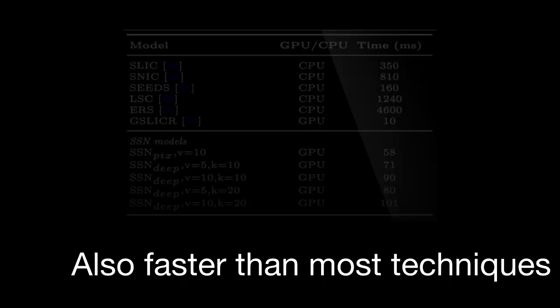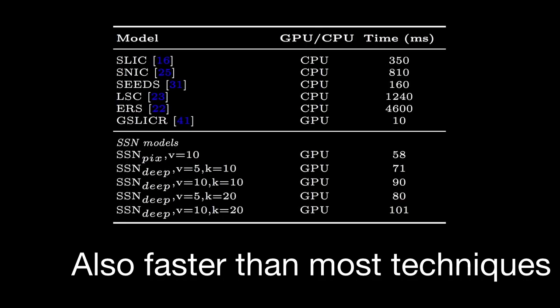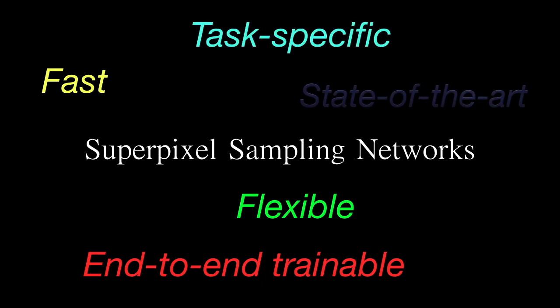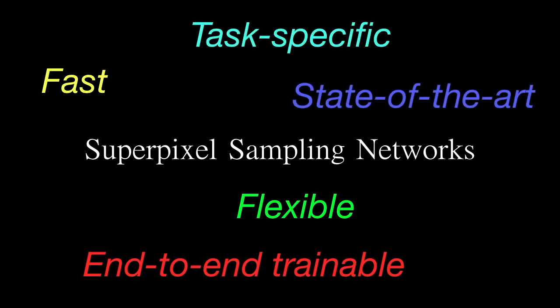An analysis of runtime indicates that SSN is also faster than most of the existing superpixel techniques. In summary, we propose superpixel sampling networks that are fast, end-to-end trainable, allow learning with flexible loss functions, and can generate task-specific superpixels with state-of-the-art performance. Thank you.